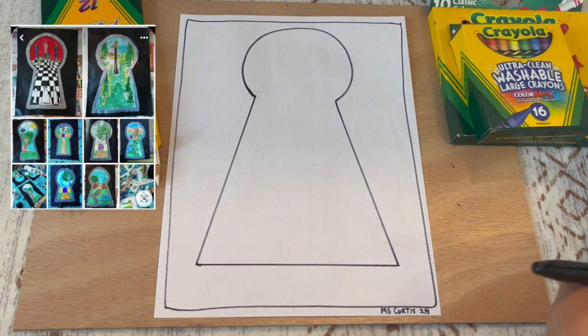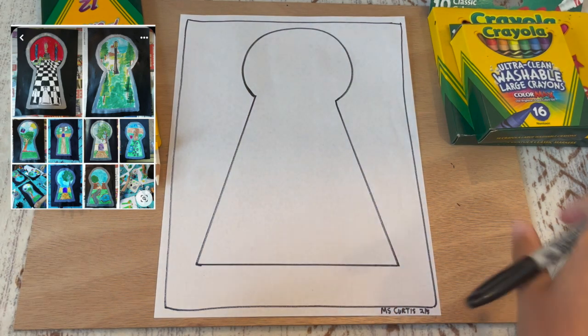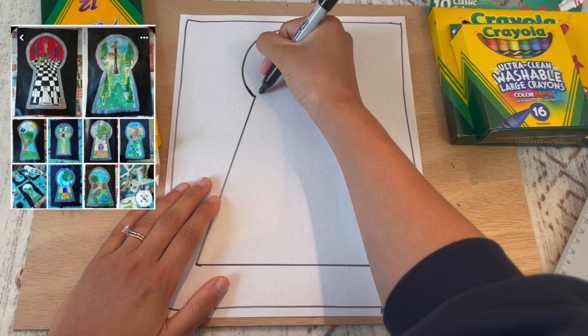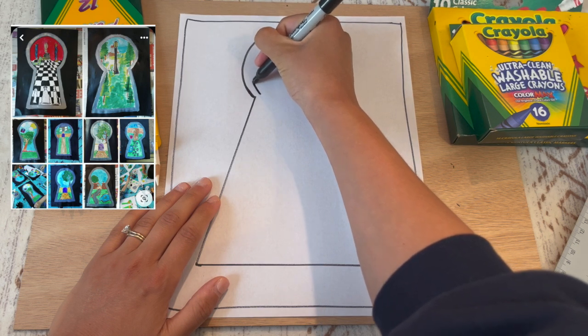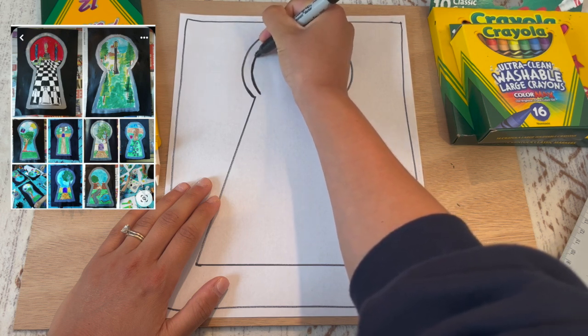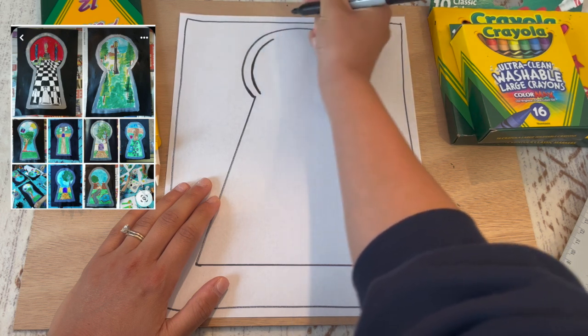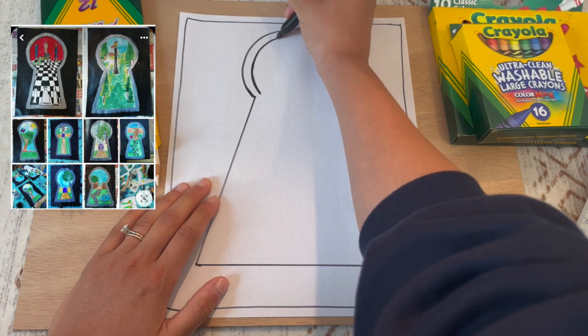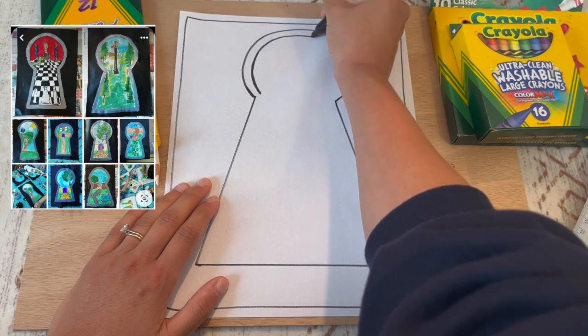And there you have it, that's the general shape of the keyhole. So the next thing you're going to want to do though is make an outline for this. So take your time and you might want to use a pencil and then take the marker and go over the lines, or just use a pencil in general. That's fine.